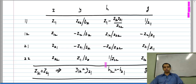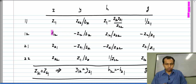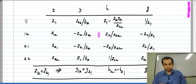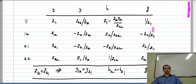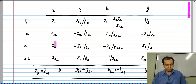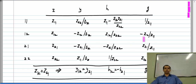One more thing: if Z12 happens to be 0 — that is, there is no reverse transmission in Z parameters — then the reverse transmission parameter is 0 regardless of which set you choose: Y12, H12, and G12 will all be 0. Such a network where the reverse transmission parameter is 0 is known as a unilateral network. Similarly, if the forward parameter Z21 is 0, then Y21 and H21 will also be 0. Being unilateral or being reciprocal are properties of the network, and they hold good regardless of which parameter set you choose.